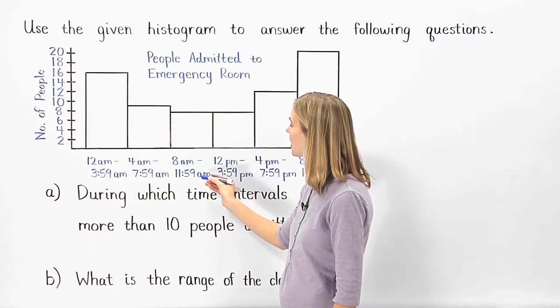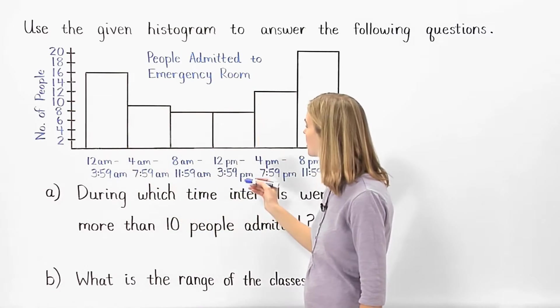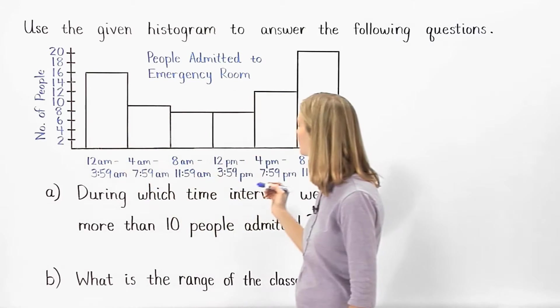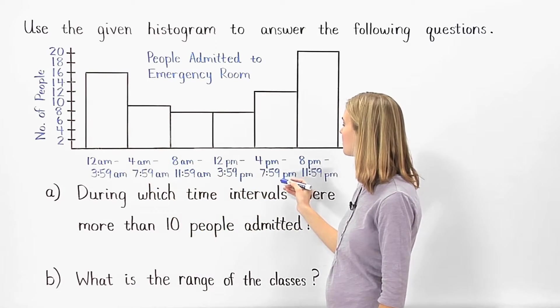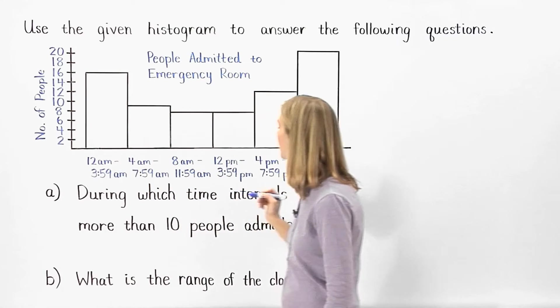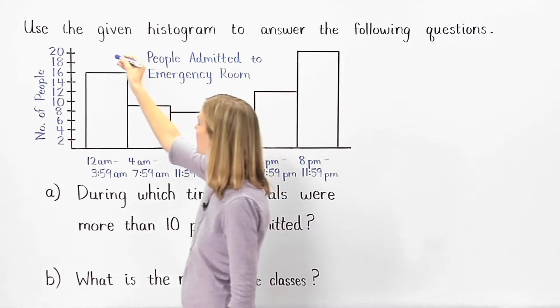Between 8 a.m. and 11.59 a.m., 8 people were admitted. Between 12 p.m. and 3.59 p.m., 8 people were admitted. Between 4 p.m. and 7.59 p.m., 12 people were admitted. And between 8 p.m. and 11.59 p.m., 20 people were admitted.